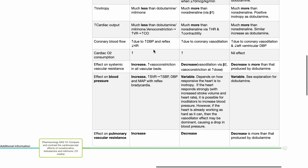Regarding effects on systemic vascular resistance: noradrenaline increases SVR with vasoconstriction in all vascular beds. Dobutamine decreases SVR due to its vasodilatory effects via beta-2 agonism; however, vasoconstriction increases at higher dosages. Milrinone decreases SVR more than that produced by dobutamine.